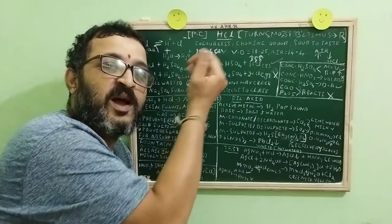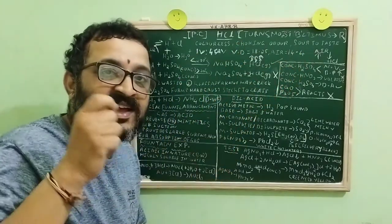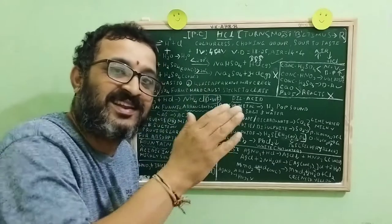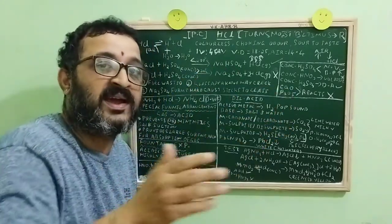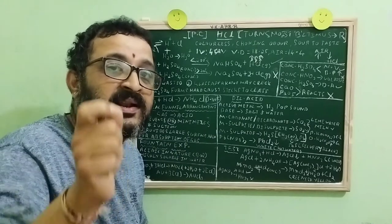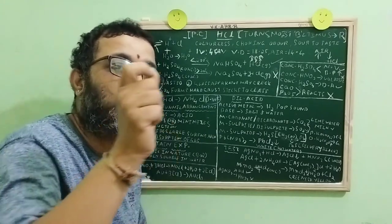It turns moist blue-litmus red, colorless phenolphthalein to colorless, orange color methyl orange to pink, and pink color alkaline phenolphthalein to colorless.